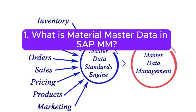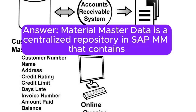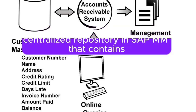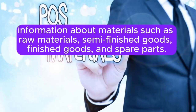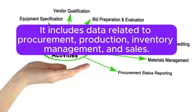Question 1: What is Material Master Data in SAP MM? Material Master Data is a centralized repository in SAP MM that contains information about materials such as raw materials, semi-finished goods, finished goods, and spare parts. It includes data related to procurement, production, inventory management, and sales.